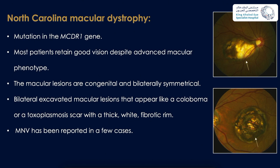North Carolina macular dystrophy, caused by mutation in the MCDR1 gene, is another dystrophy associated with macular neovascularization. Most patients retain good vision despite an advanced macular phenotype. The macular lesions are congenital and bilaterally symmetrical. Clinically they have excavated macular lesions that appear like a coloboma or a toxo scar with a thick white fibrotic appearance, as seen in the photos. MNV has been reported in a few cases.